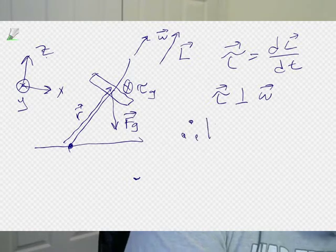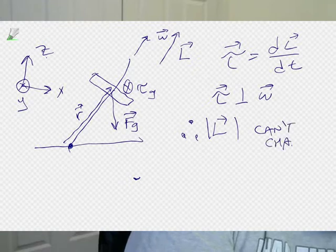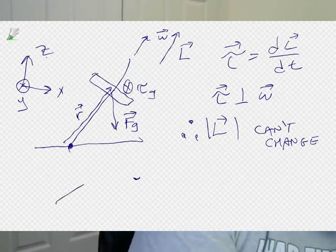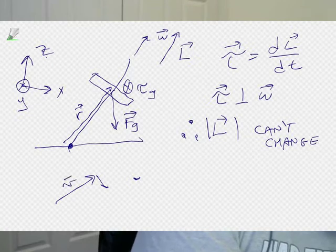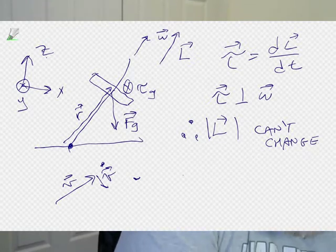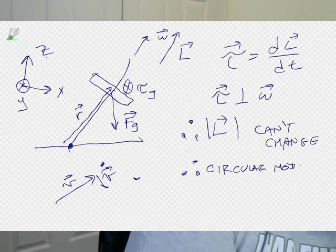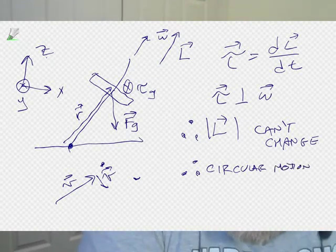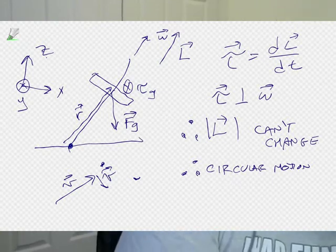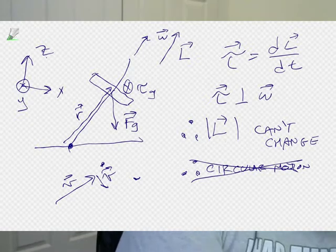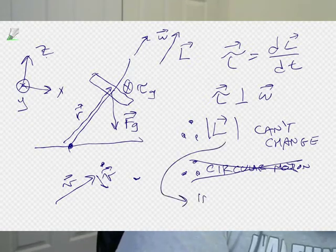So what that means is, therefore, we will conclude that the magnitude of L can't change, because L is parallel to omega and the torque is perpendicular. When you have a vector whose rate of change is perpendicular to it, it doesn't change the magnitude, it just changes the direction — this is the case for circular motion of L. However, this actually doesn't logically follow, because this 'L can't change' is only instantaneously true.